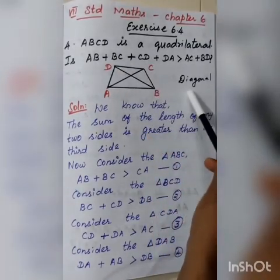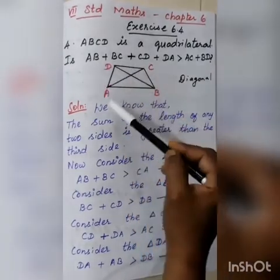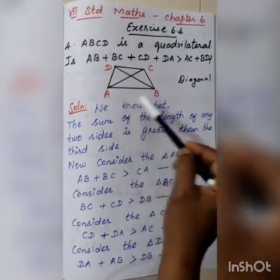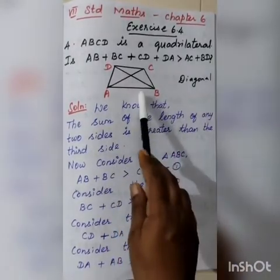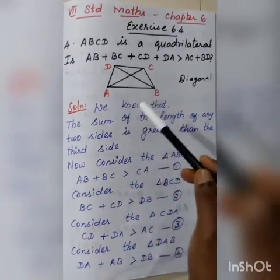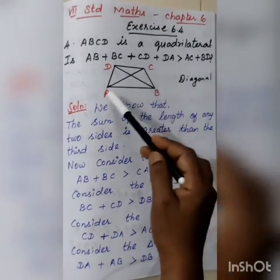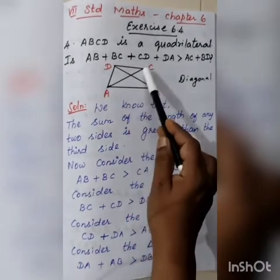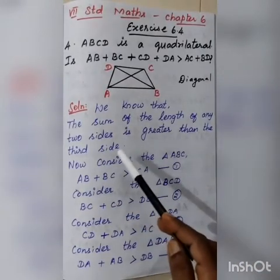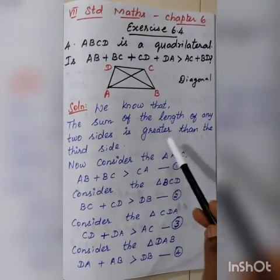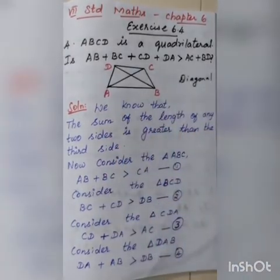AC and BD are the diagonals of the quadrilateral. When we draw the diagonals, four triangles are formed: ABC, BCD, CDA, and DAB. We know that the sum of the length of any two sides of a triangle is greater than the third side. Using this condition, we can prove the given expression.